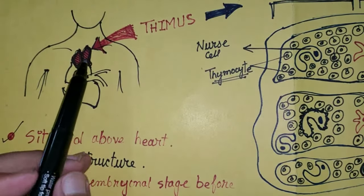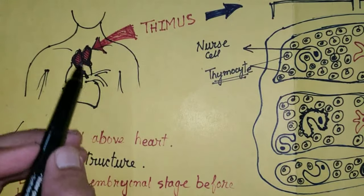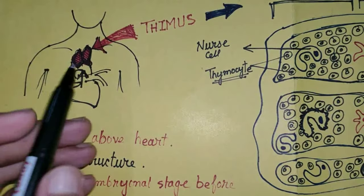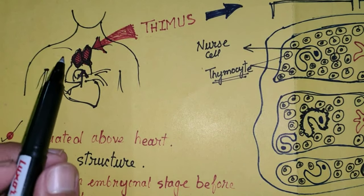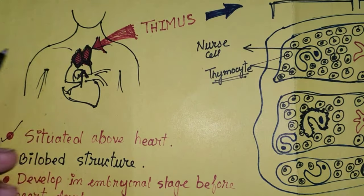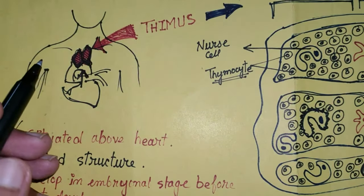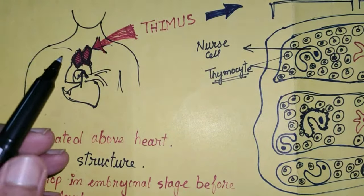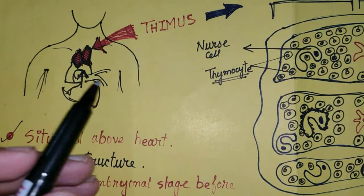The thymus gland is a bilobed structure, as we can see here. Regarding the development of the thymus gland — where it develops — the thymus gland is actually developed in the early embryonal stage of life, even before the development of the heart.